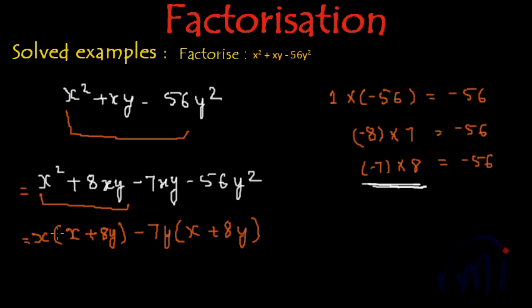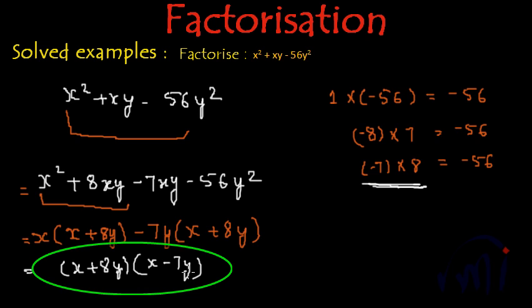And from here we can take x + 8y common and then we will be left with x - 7y. So the factors of x² + xy - 56y² are x + 8y and x - 7y.